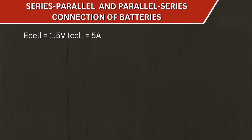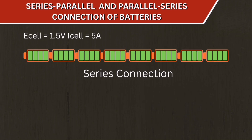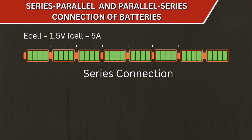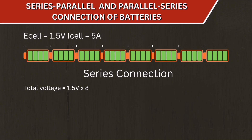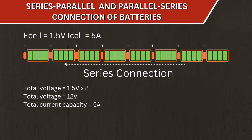The first connection is the series connection, where the negative terminal of one cell is connected to the positive terminal of the next, repeated until all eight cells are connected in series. The total voltage equals 1.5 volts multiplied by 8, which is 12 volts. Since the sources are series-connected, the current capacity of the circuit remains 5 amperes.